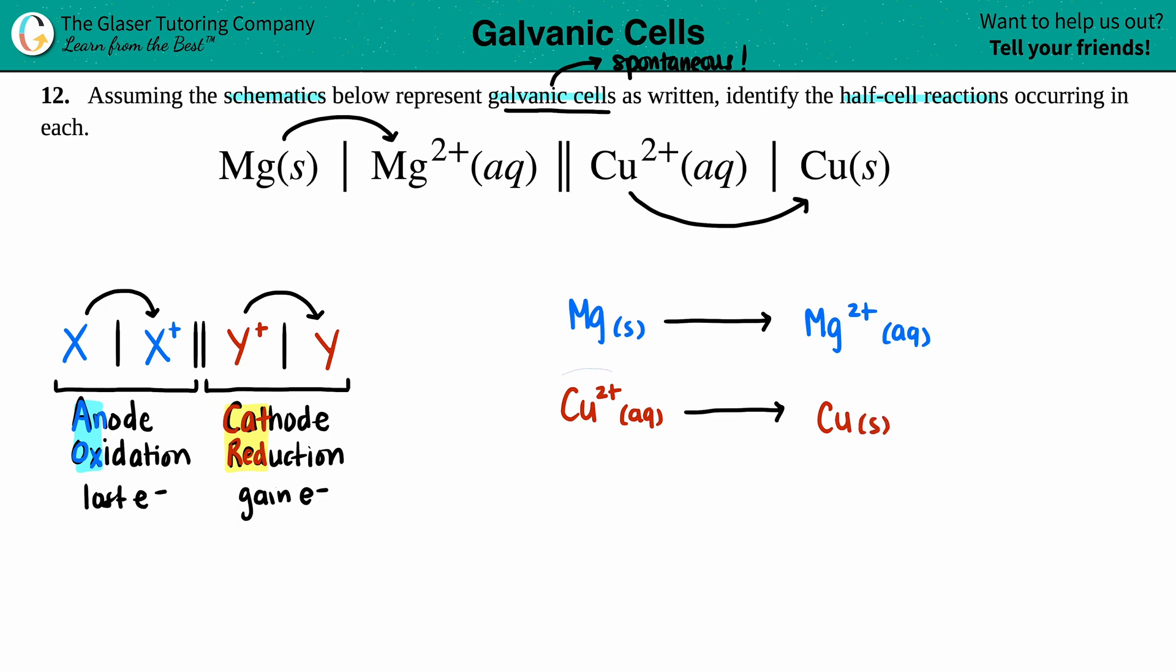Now, in order to make these reactions work, we just have to add the electrons. Remember, you always add electrons to the more positive side. If this magnesium was a zero charge and this magnesium was a +2, +2 is higher than zero, so I would add electrons on the product side. You add as many as you need to go from the higher number to the lower number. So if you think on a number line, +2 to 0, I need two electrons.